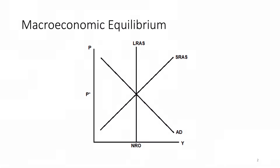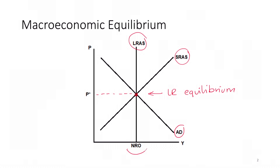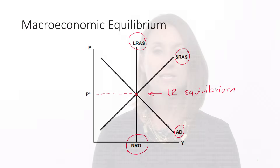When we bring together all of our curves — our downward sloping aggregate demand, upward sloping short run aggregate supply, and our vertical long run aggregate supply — the point where all three curves meet is what we call our long run equilibrium. This gives us the equilibrium price level and the natural rate of output. In this module, we want to understand what happens when we have changes in this macroeconomic equilibrium to help explain both long run economic growth as well as short run economic fluctuations.